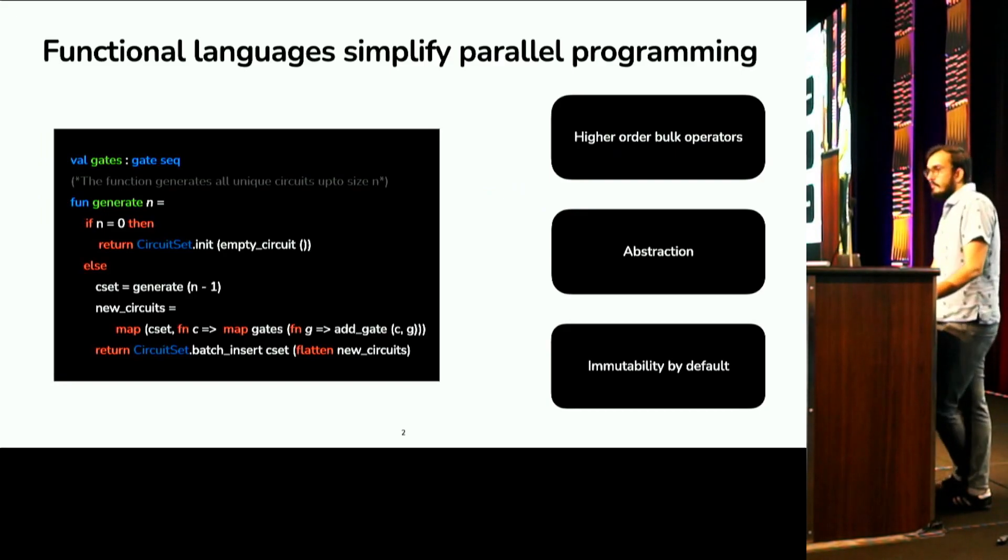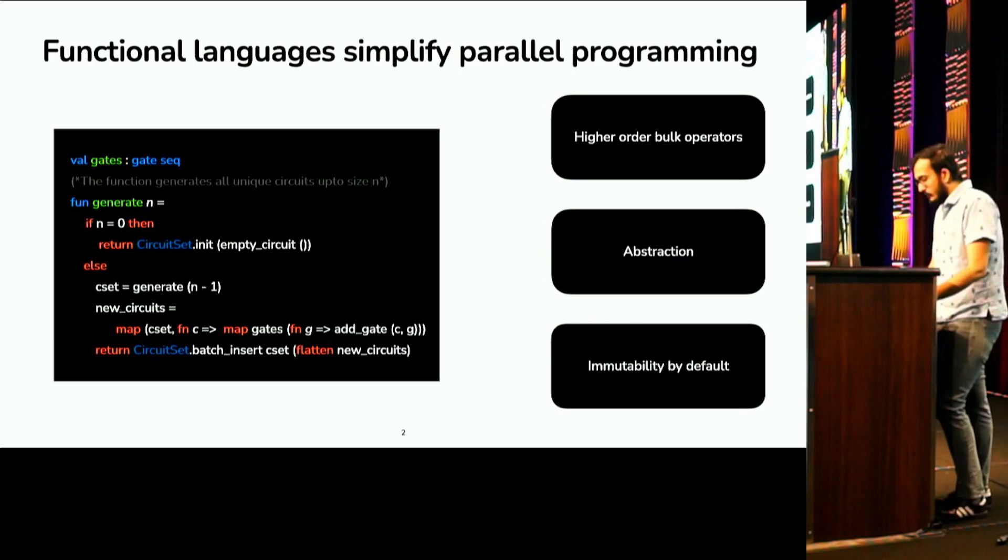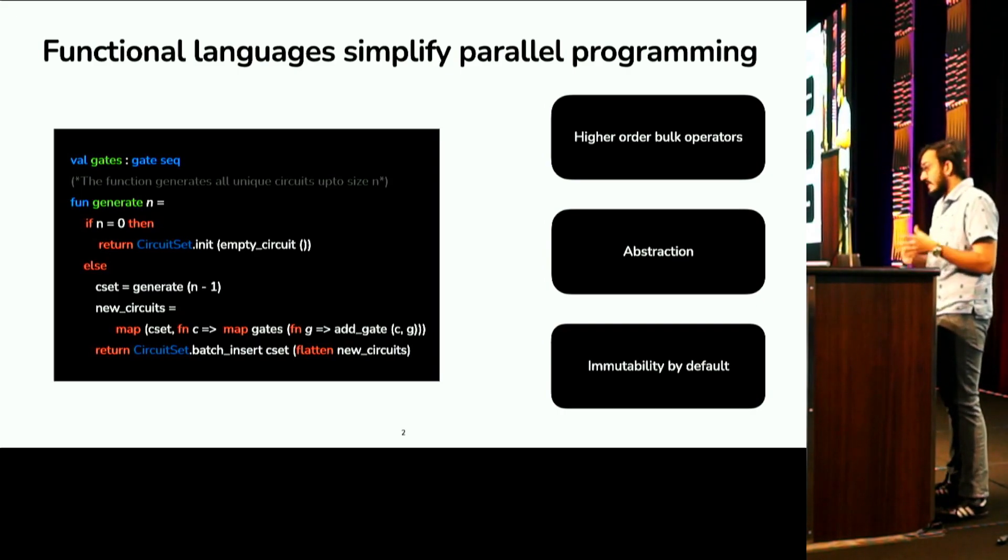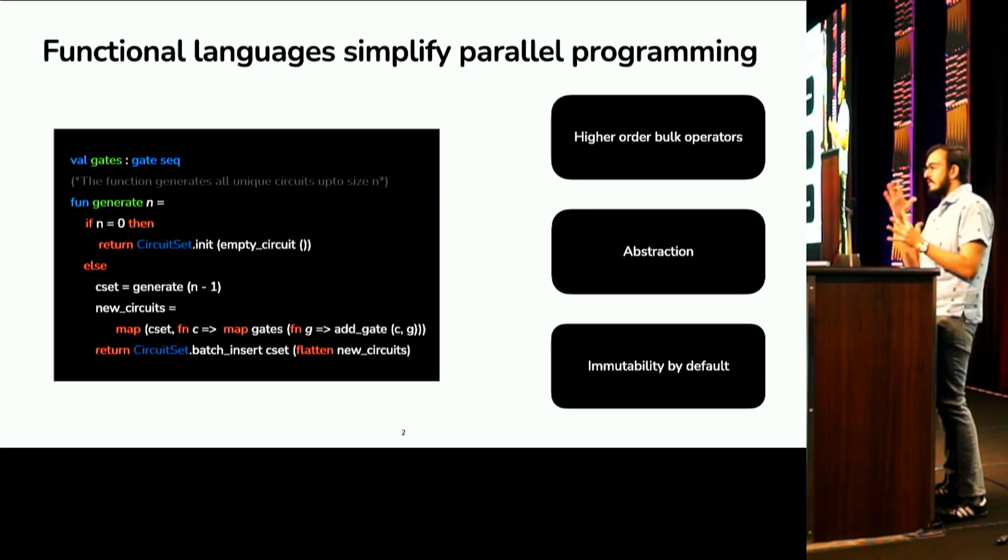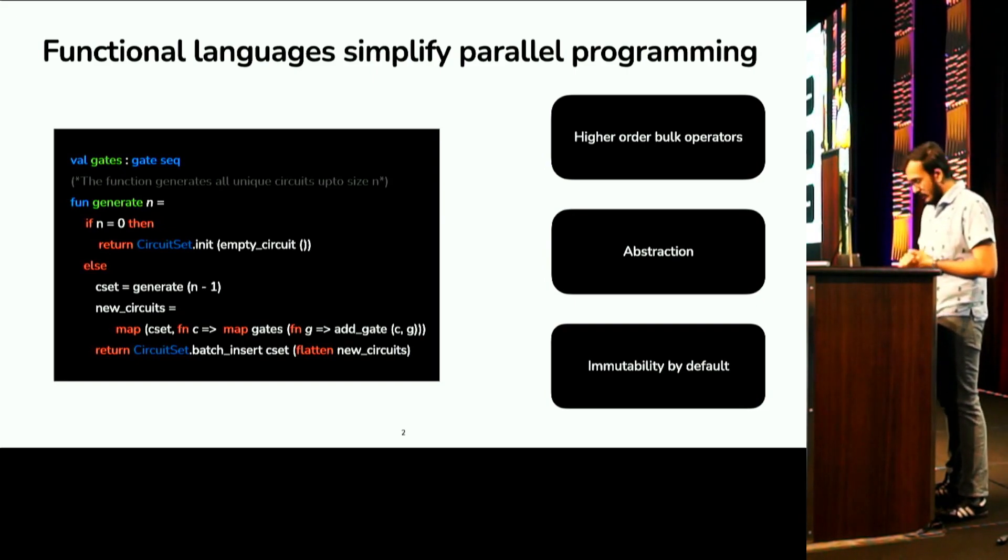So researchers have proposed parallel functional programming for parallelism because it offers you so many tools to make sure that your program is correct. First, you can express parallelism using these higher order bulk operators like map, filter, reduce, which express a natural opportunity for parallelism. And then you can think of them as if they're executing sequentially for correctness purposes.